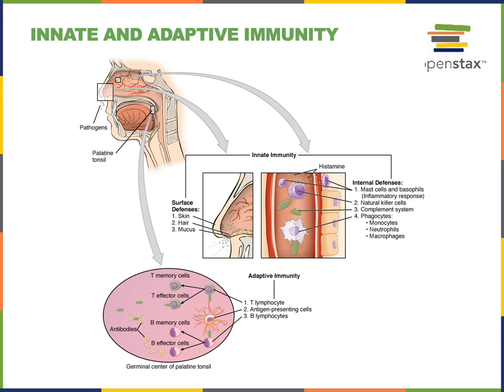B-lymphocytes produce antibodies as part of antibody-mediated immunity, also called humoral immunity. Antibodies are secreted by a type of B-lymphocyte known as a plasma cell or plasmacyte. These antibodies travel in the blood and lymph, binding to antigens on the surface of pathogens. The antibodies then function to neutralize the pathogen and sensitize other defense mechanisms that come and destroy the pathogen, effectively targeting the pathogen to stimulate other leukocytes.